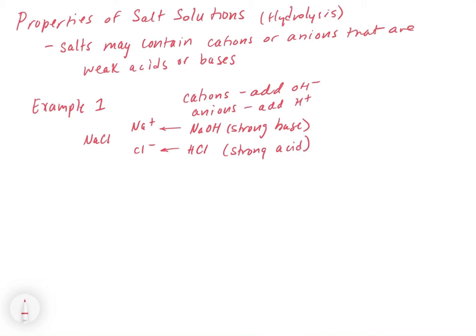Since the conjugate acids and bases of these ions are strong, both Na+ and Cl- are going to be neutral ions. The conjugate base of a strong acid is not a base at all - it's neutral. Cl- is a weaker base than water itself, so it won't react with water. Similarly, Na+ coming from the strong base NaOH is not a strong enough acid to react with water. So NaCl is a neutral salt.